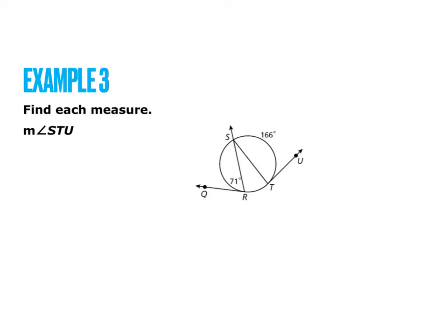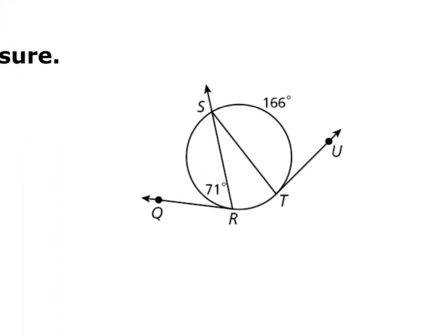Example 3: we need to find the measure of angle STU, going from S to T to U. We're going from the arc to the angle, so we divide by 2. We take 166 and divide it by 2, so the measure of the angle is 83 degrees.